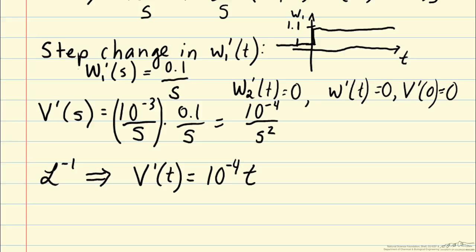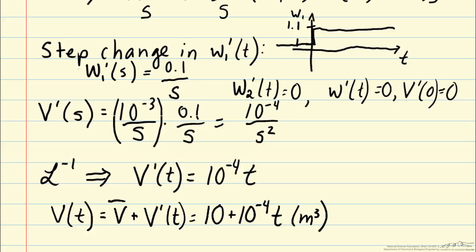Now that we've solved for v prime of t, we can go back to our original variables and solve for the volume in the tank, which is v bar plus v prime of t.